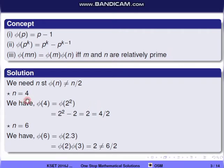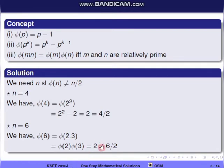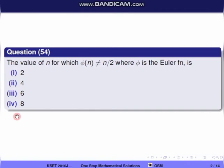Now check n = 6: φ(6) = φ(2)·φ(3) since 2 and 3 are relatively prime. Using concept 1, this equals (2−1)(3−1) = 2. But n/2 = 6/2 = 3, so φ(6) ≠ n/2. Therefore n = 6 does not satisfy the condition, and the correct option is the third one.